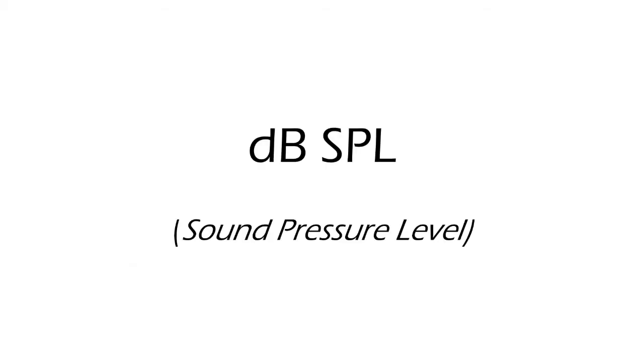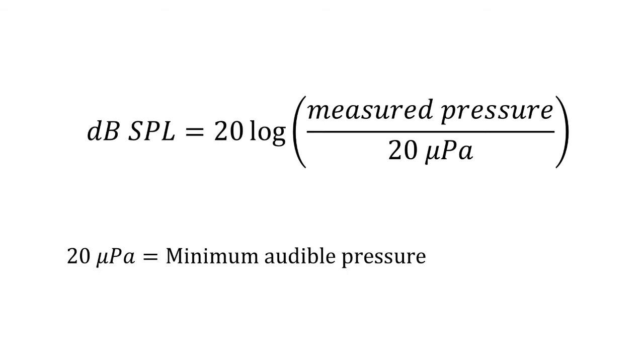For example, sound pressure level decibels, or decibels SPL, are the ones used specifically to measure sound level. In the formula, we see that they are referenced to 20 micropascals, the minimum audible pressure.